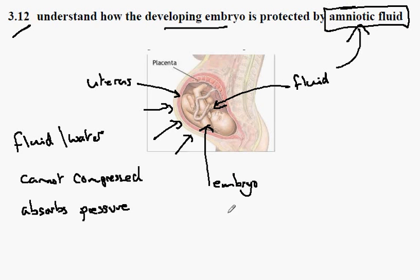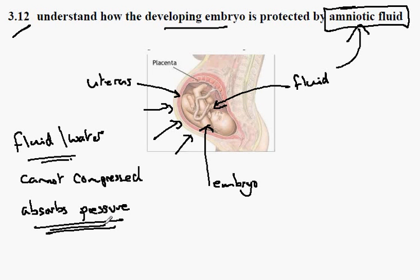If you want to experience this effect of absorbing pressure: in a swimming pool, if you try to kick out with your leg, you'll find that your leg doesn't move very quickly and it's actually very difficult to generate great force. This is an example of how the fluid absorbs the pressure — amniotic fluid absorbs any forces, any pressures, any blows to the outside wall of the uterus and protects the unborn child.